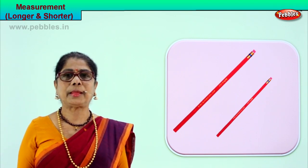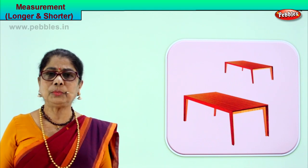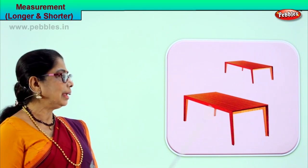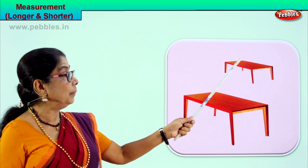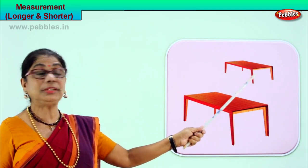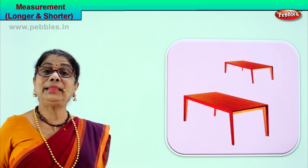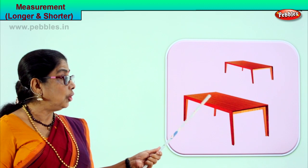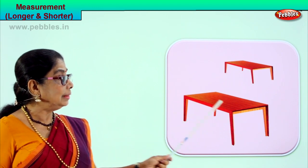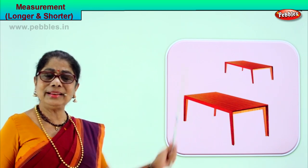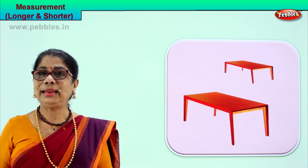Here you have two pencils — one is short and one is long. This pencil is longer than this pencil. Longer, shorter — we are learning comparison of two measurements, long and short. So we say this pencil is longer than this pencil. Let's take another picture. Look what we have here — you have two tables. Which table would you like? You will say I like a long table. We say this table is longer than this table. This is short, so we say this table is shorter than this table. Longer, shorter — we are comparing two lengths.